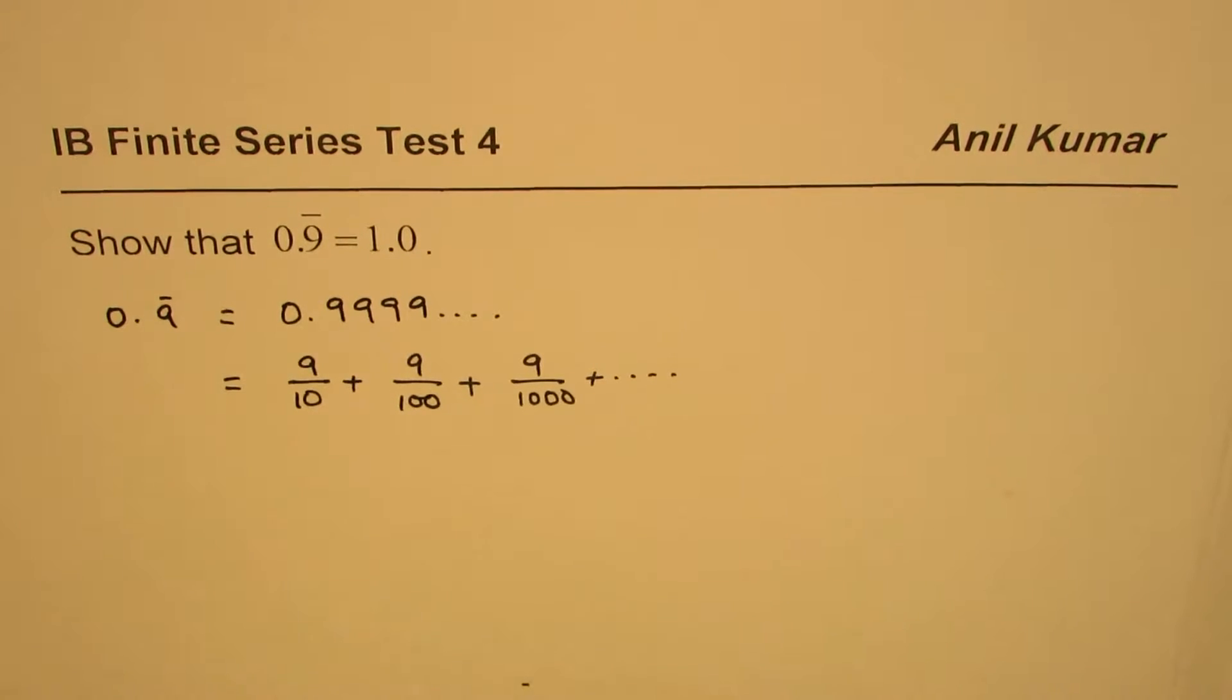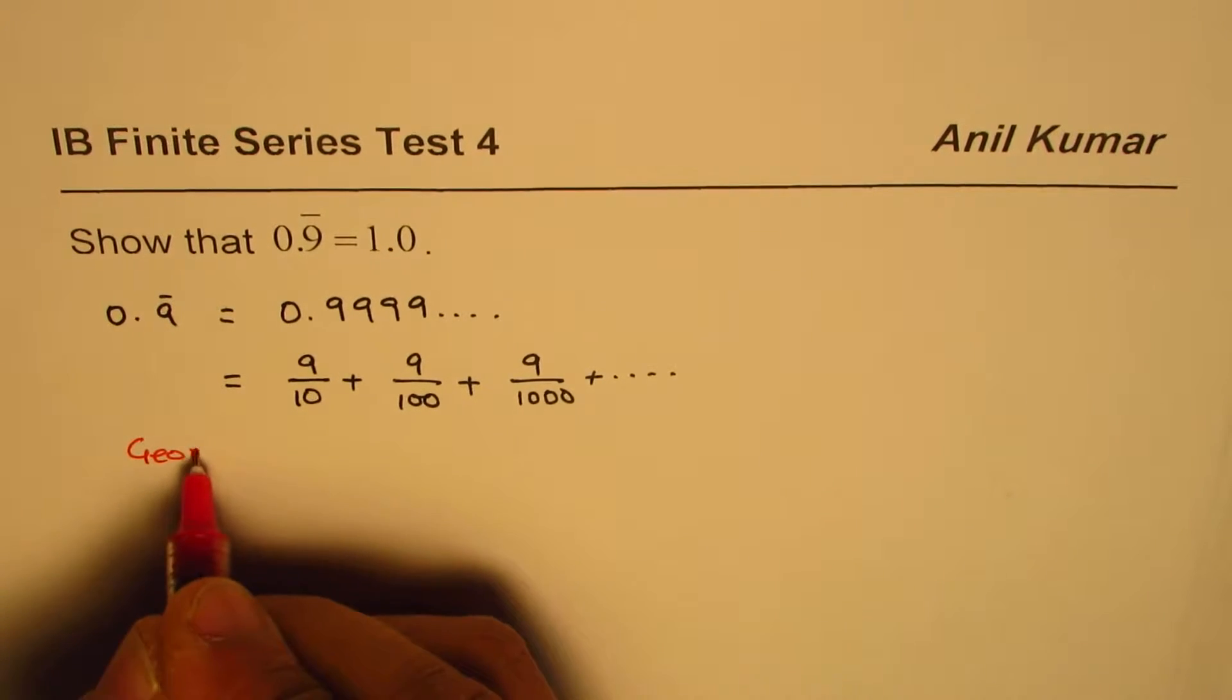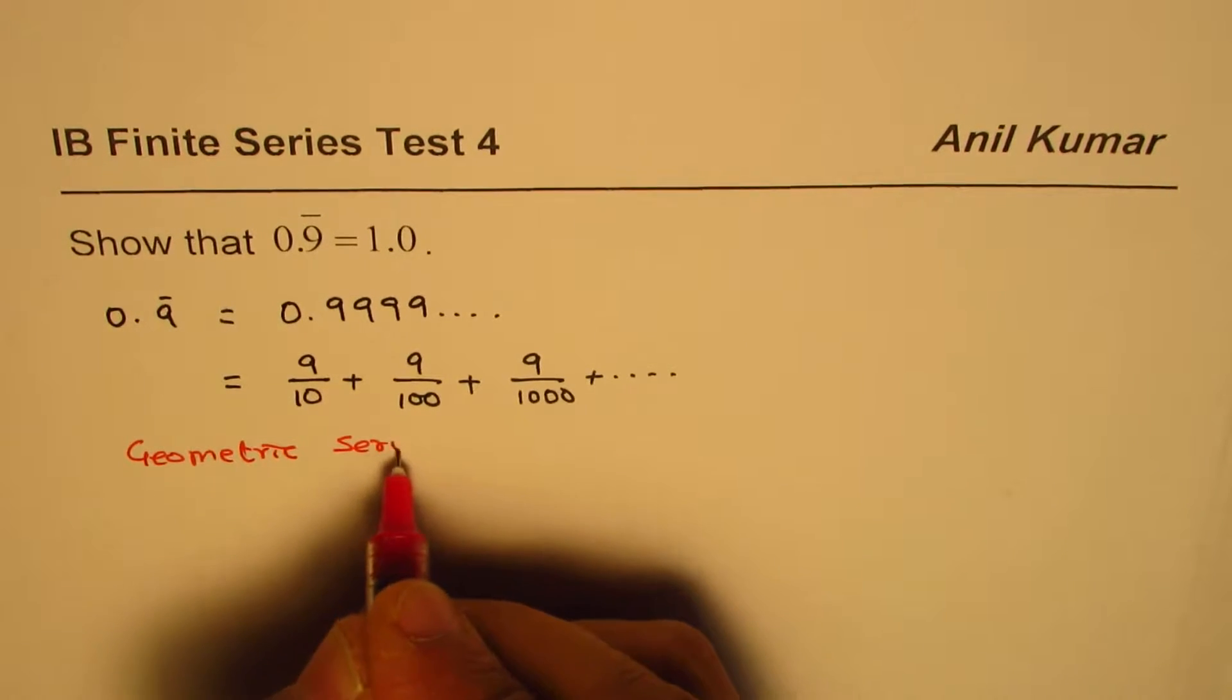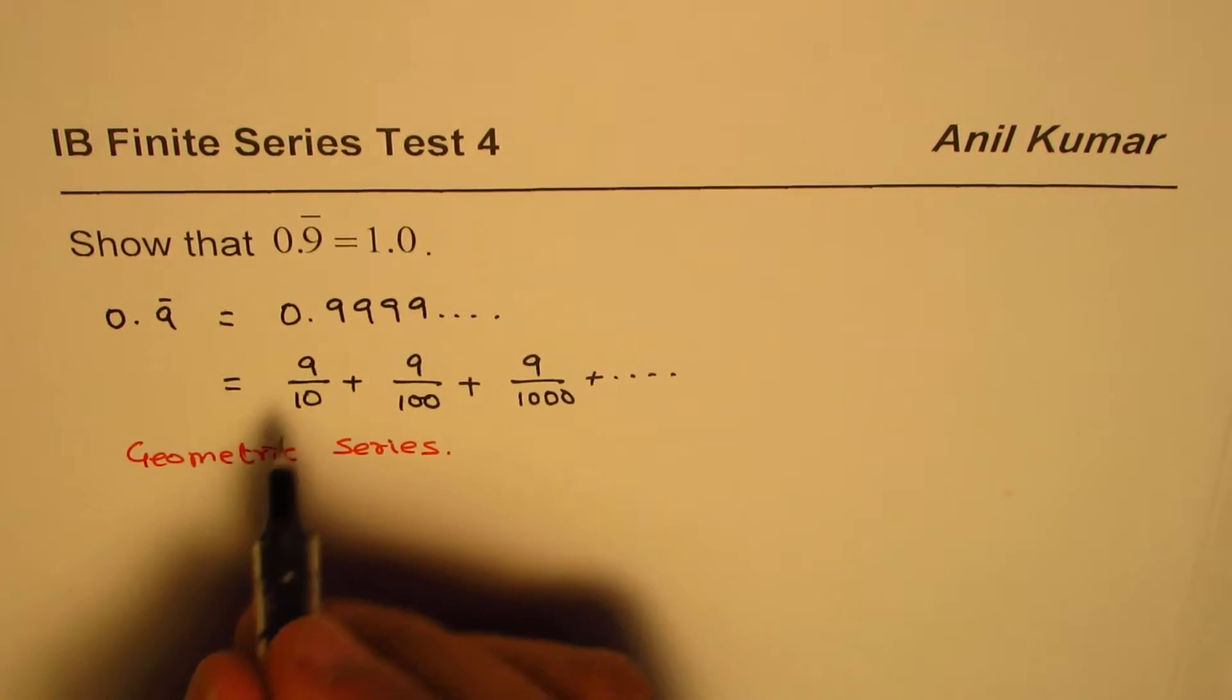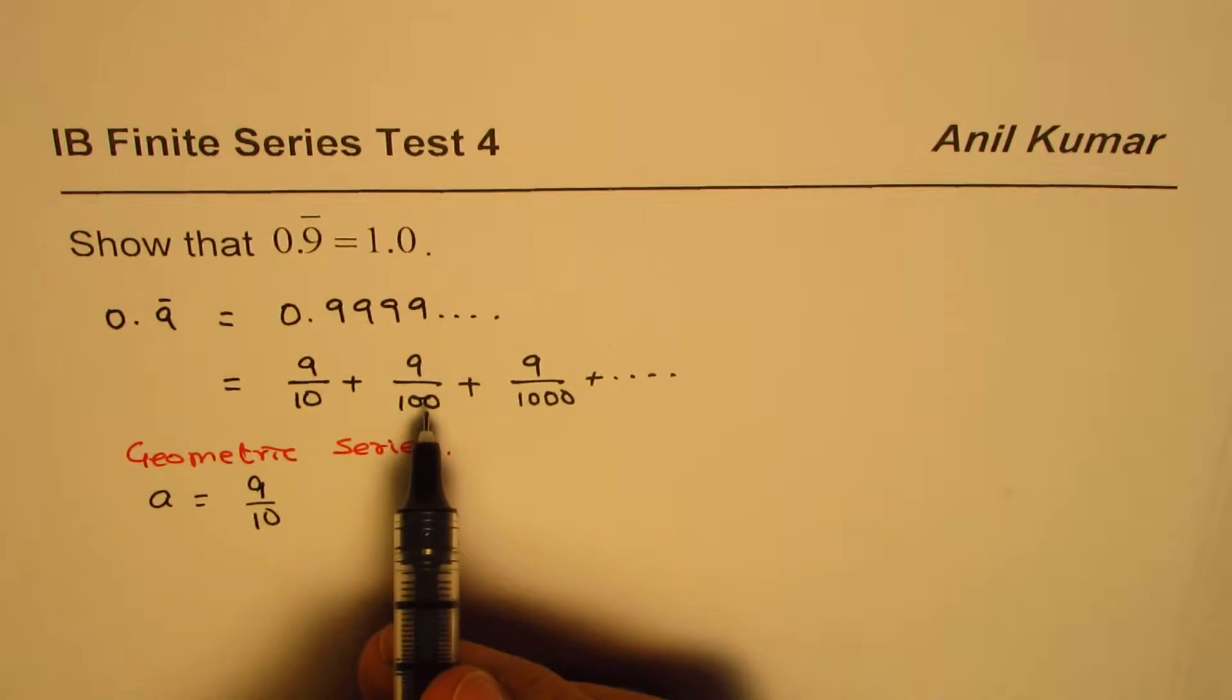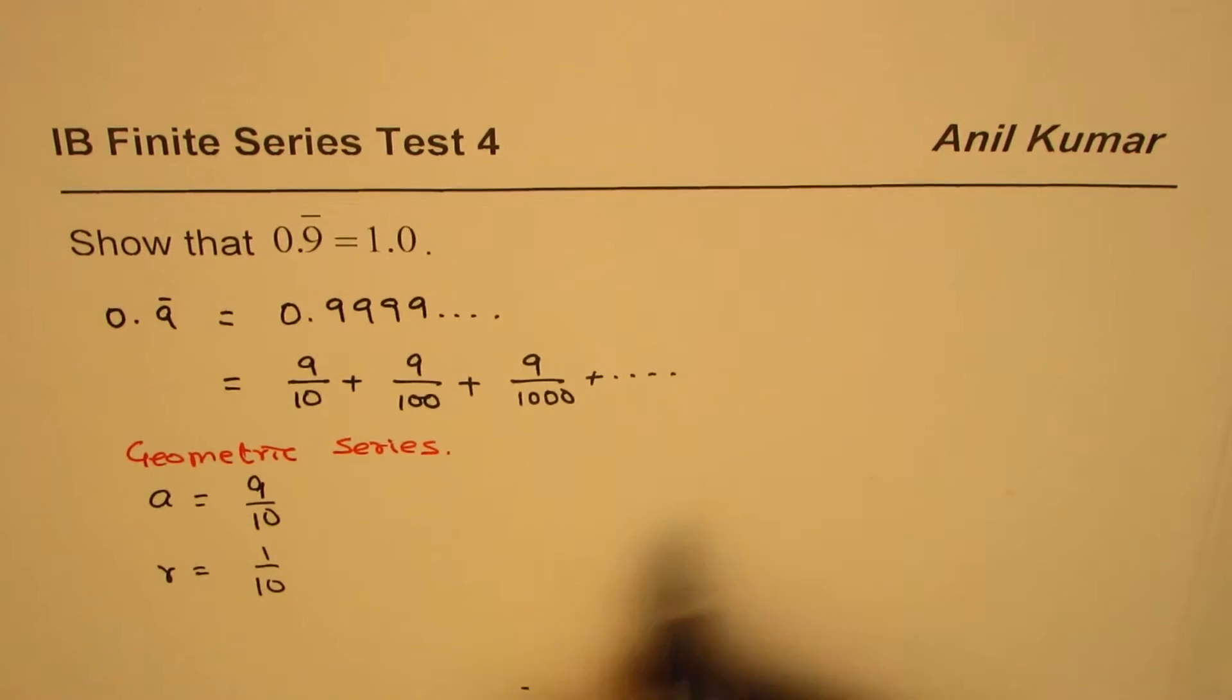Now this series here is a geometric series. In this geometric series, the first term a equals 9/10, and every time it gets multiplied by 1/10, so r is 1/10. Since it goes to infinity, it is an infinite geometric series.